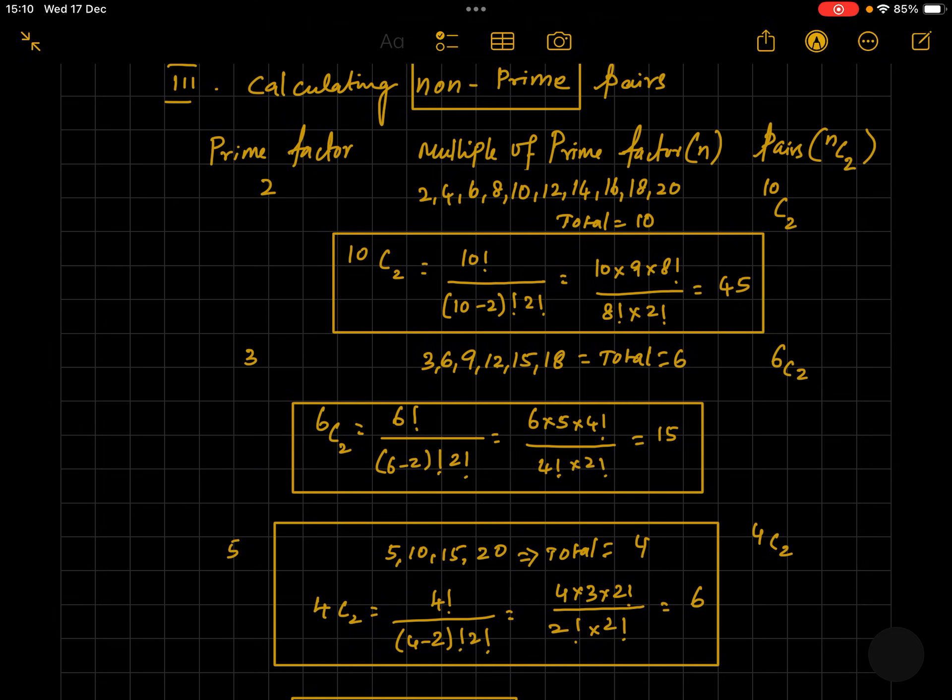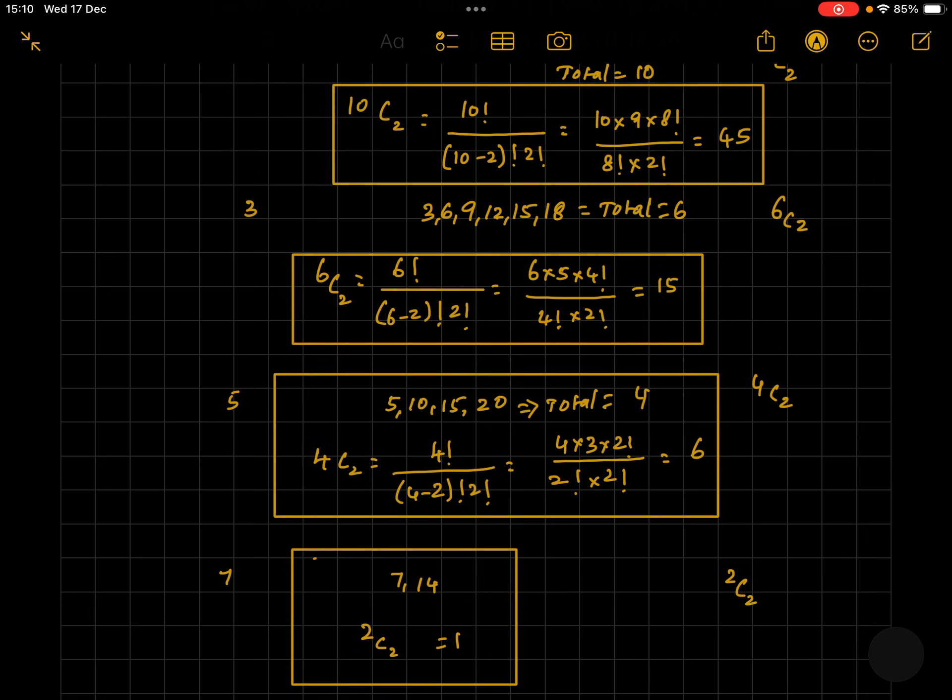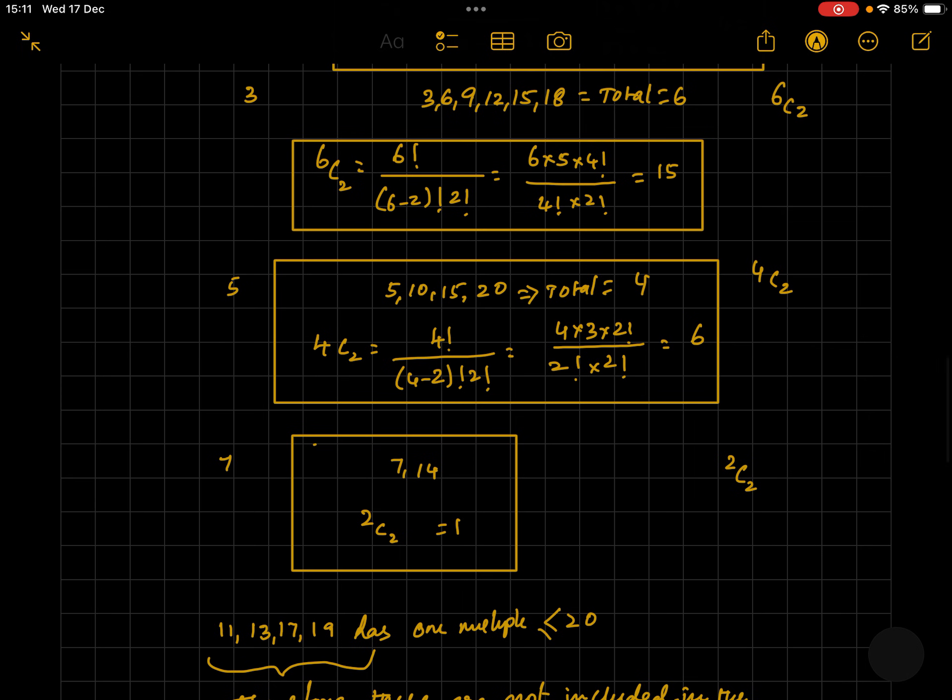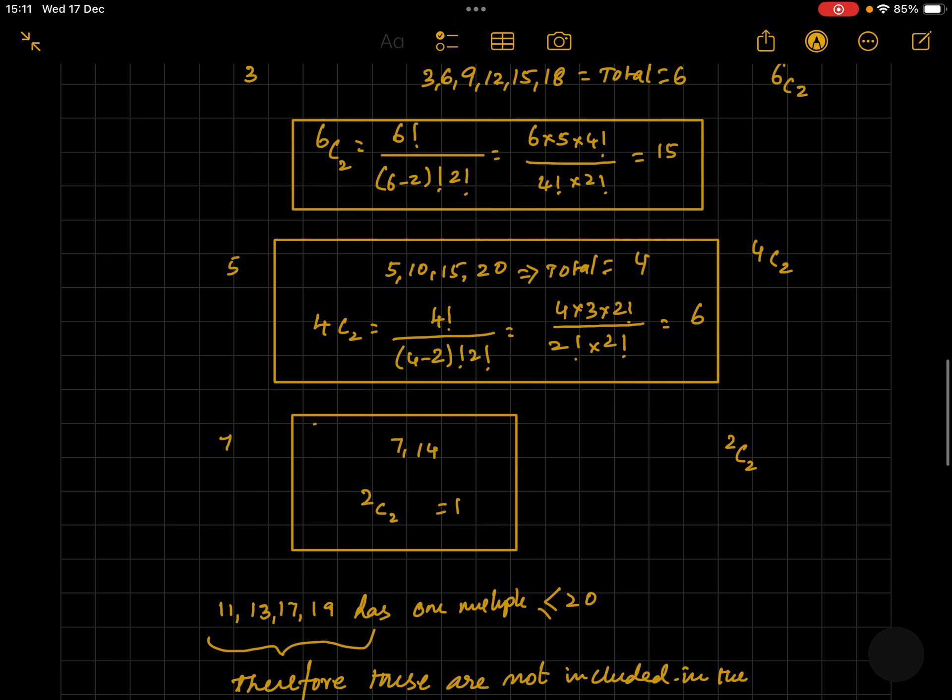Similarly, for prime factor 3, we have 15 such pairs. For prime factor 5, we have 6 such pairs. And for prime factor 7, we have 1 such pair. Therefore, we have 45 plus 15 plus 6 plus 1, which equals 67 pairs.